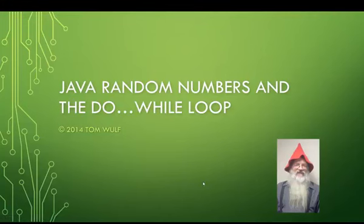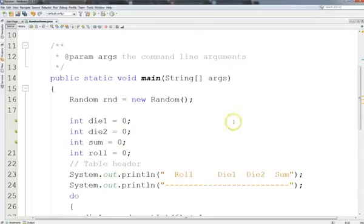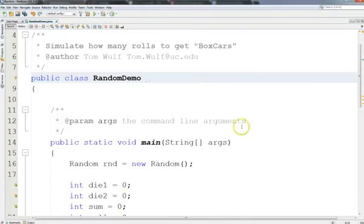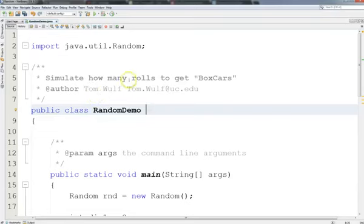We're going to continue with our work in Java. I'm going to show you how to do random numbers, and then we'll introduce our first loop, which allows us to repeat code and have it run multiple times. I've already created a project in NetBeans called Random, and this class is called RandomDemo. This is going to be a simulator to see how many times we have to roll two dice to get boxcars.